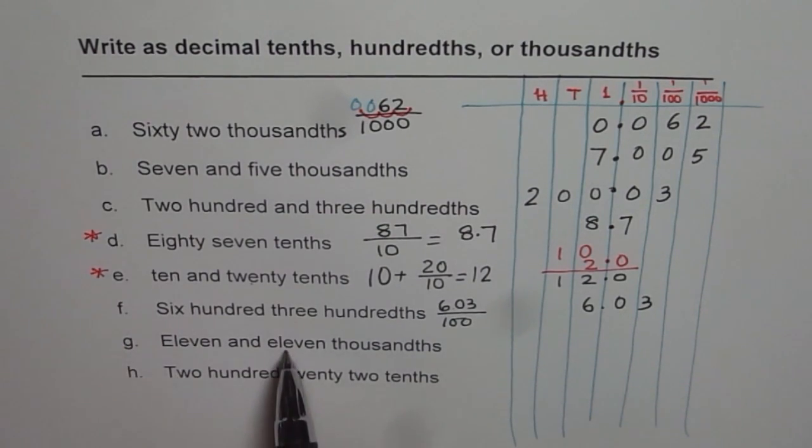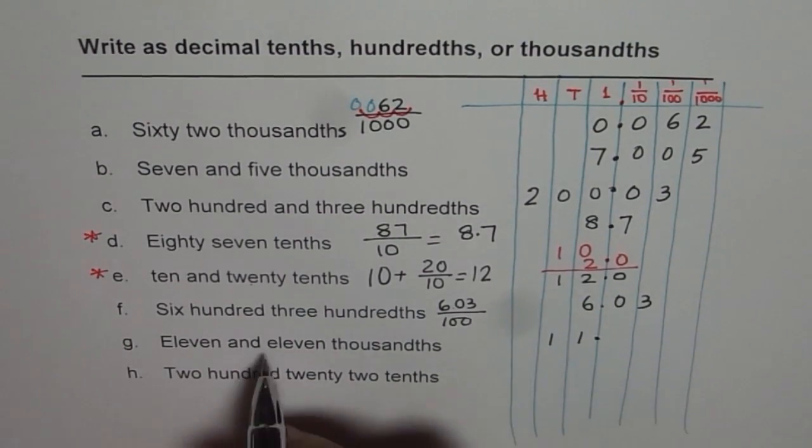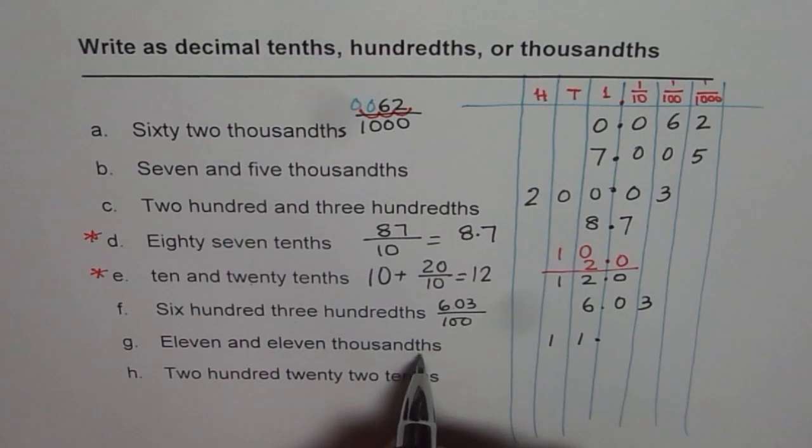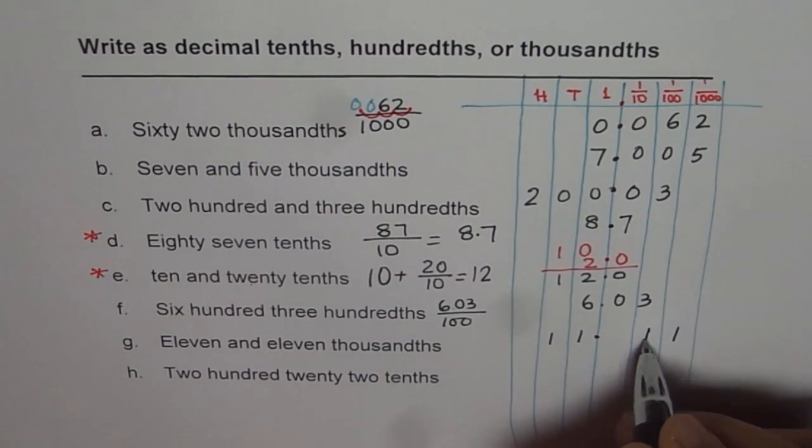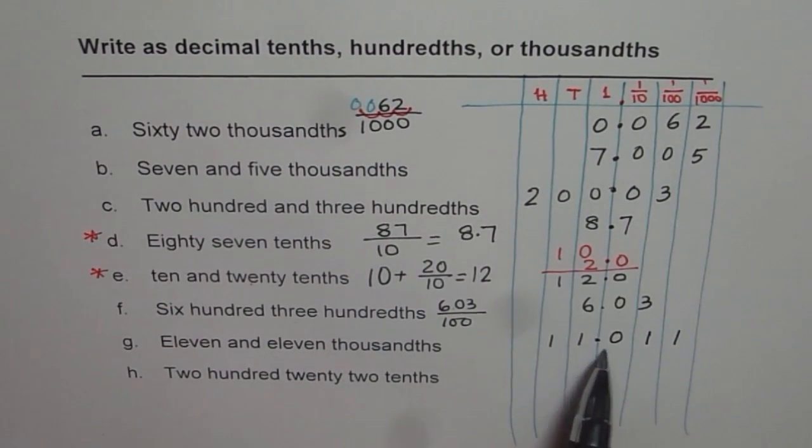Eleven and eleven thousandths. So before decimal, we have eleven and then eleven ends at thousandths place. So that is eleven. So we have zero here. That is eleven point zero eleven.